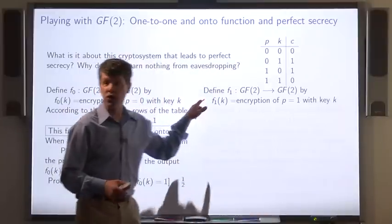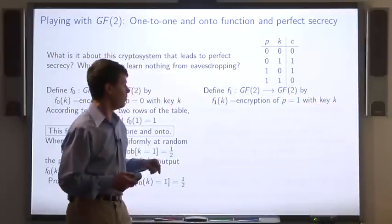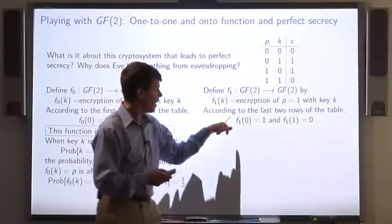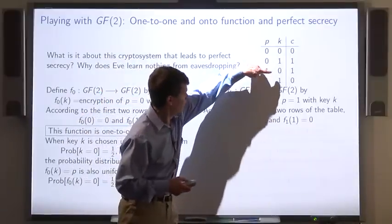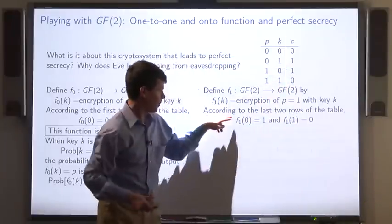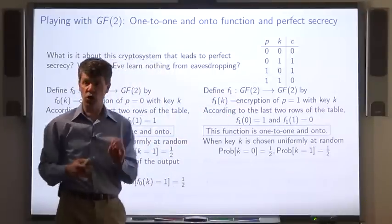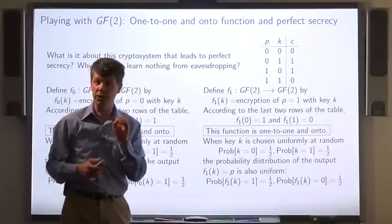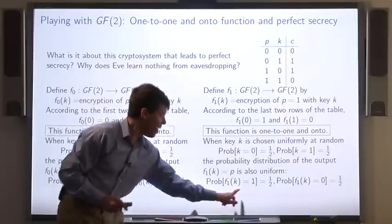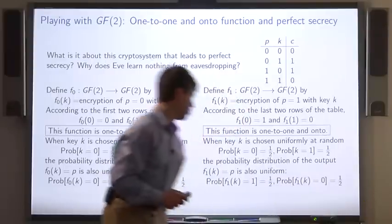Now let's turn to the function f1. f1 is the encryption of plaintext 1 with the key k. Now, according to the last two rows of this table, f1(0) = 1 and f1(1) = 0. So, this function is also 1-to-1 and onto. And so, when the key is chosen uniformly at random, the probability distribution of the output is also uniform. That is, the probability that the ciphertext is 1 is 1/2 and the probability that the ciphertext is 0 is also 1/2.